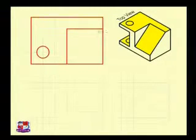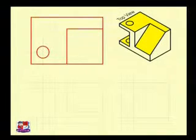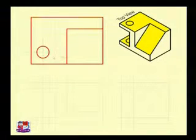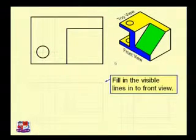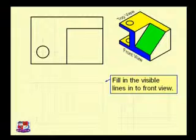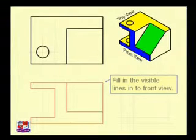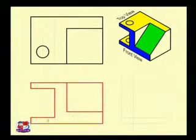In the case of bottom view, these lines will not be visible, hence they will be drawn as dotted lines. The circular hole is made throughout these two faces, so it will be visible in both top view and bottom view. For front view, if we look from the front side, this blue colored face would be visible, and this green colored portion will also be visible in front view.